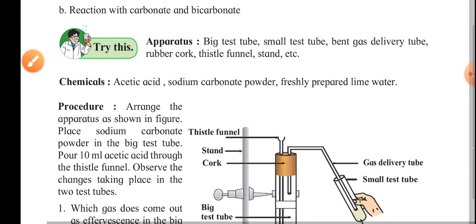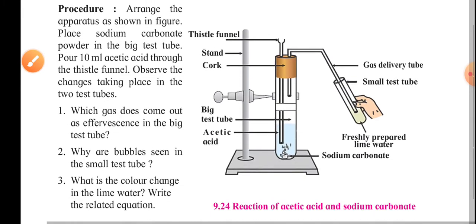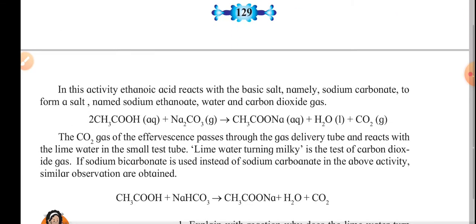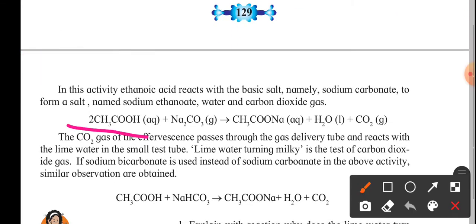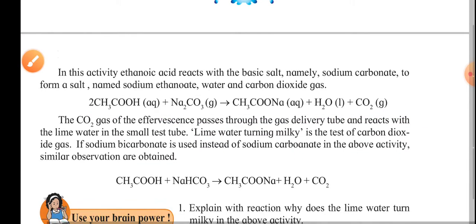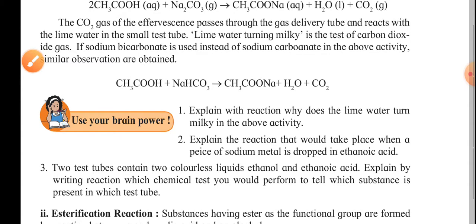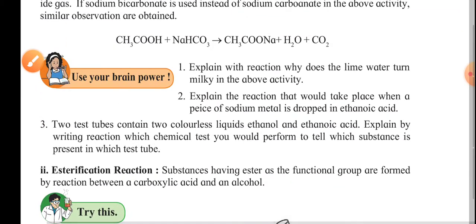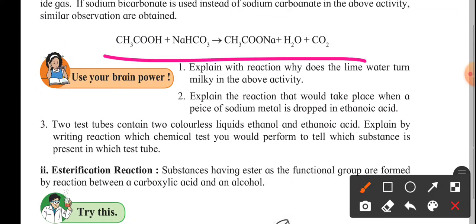Reaction with carbonate and bicarbonate: acetic acid reacting with sodium carbonate forms sodium ethanoate along with water and carbon dioxide. Similarly, the reaction with sodium bicarbonate also produces sodium ethanoate, water, and carbon dioxide.